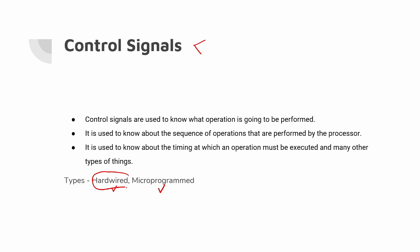First of all, what are the functional units of a computer? A computer has a control unit. How do we use control signals? We use control signals to read, write, copy, add, subtract. We use control signals to perform these operations.